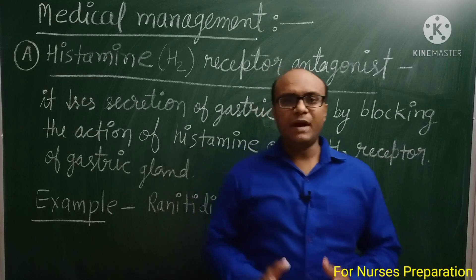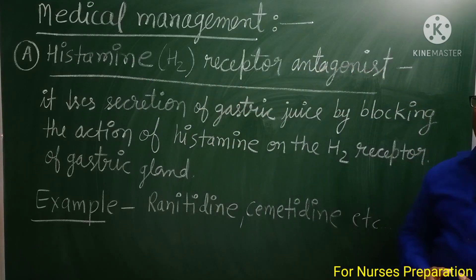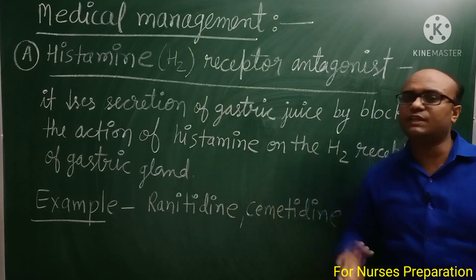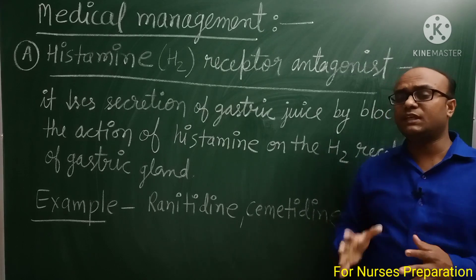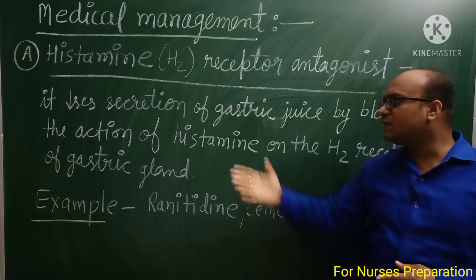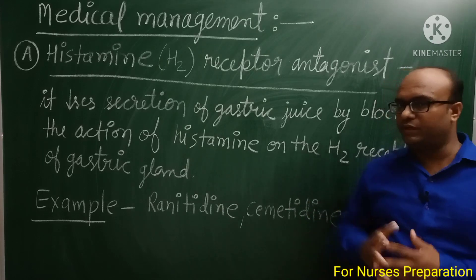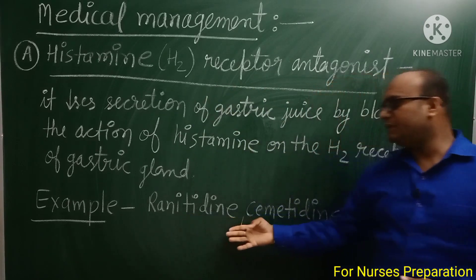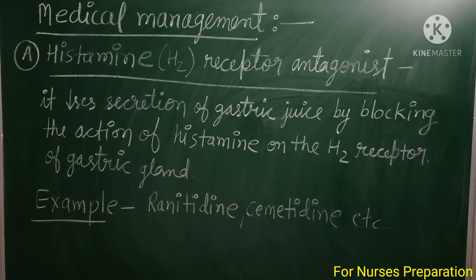Medical management में first drug है histamine receptor antagonist। It decreases secretion of gastric juice by blocking the action of histamine on the H2 receptor of gastric gland। ये दवाइयाँ gastric gland के H2 receptors पर histamine के action को block करती हैं, जिससे gastric juice कम secret होगा। Important examples हैं: ranitidine और cimetidine।